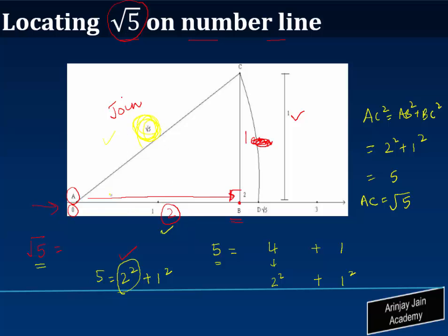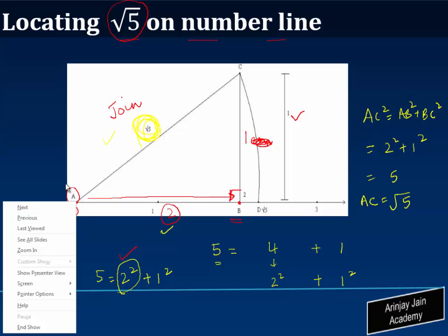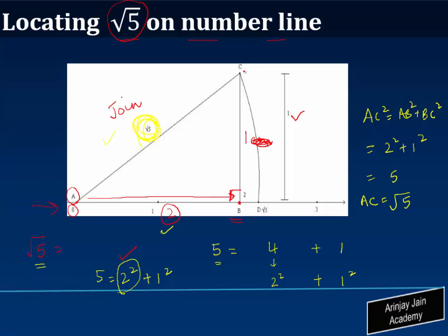So if the length of A C is square root of 5, what we do is we'll put in a compass over here, take the distance between this, and taking this as radius we are just going to draw an arc which cuts the line at a particular point. The point where the number line is cut by this arc, which is reflected over here, is going to be the value of root 5.